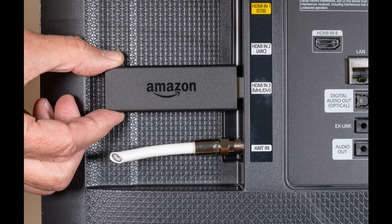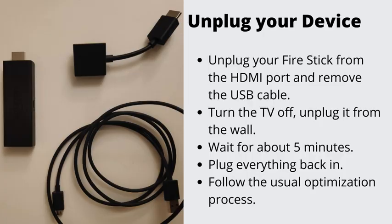Check for loose cords and push them properly in. Number 3: Plugging In and Out. We know this is kind of obvious, but this is by far the quickest and easiest way to fix your device. Unplug your Fire Stick from the HDMI port and remove the USB cable. Turn the TV off and unplug it from the wall. Wait for about 5 minutes, then plug everything back in and follow the usual optimization process.